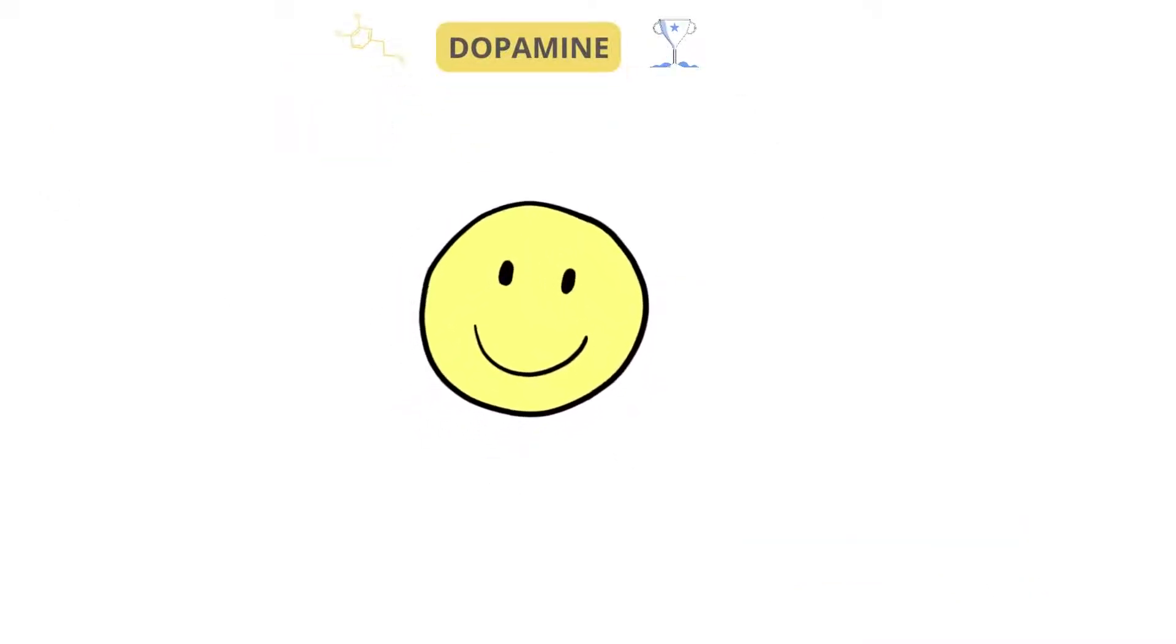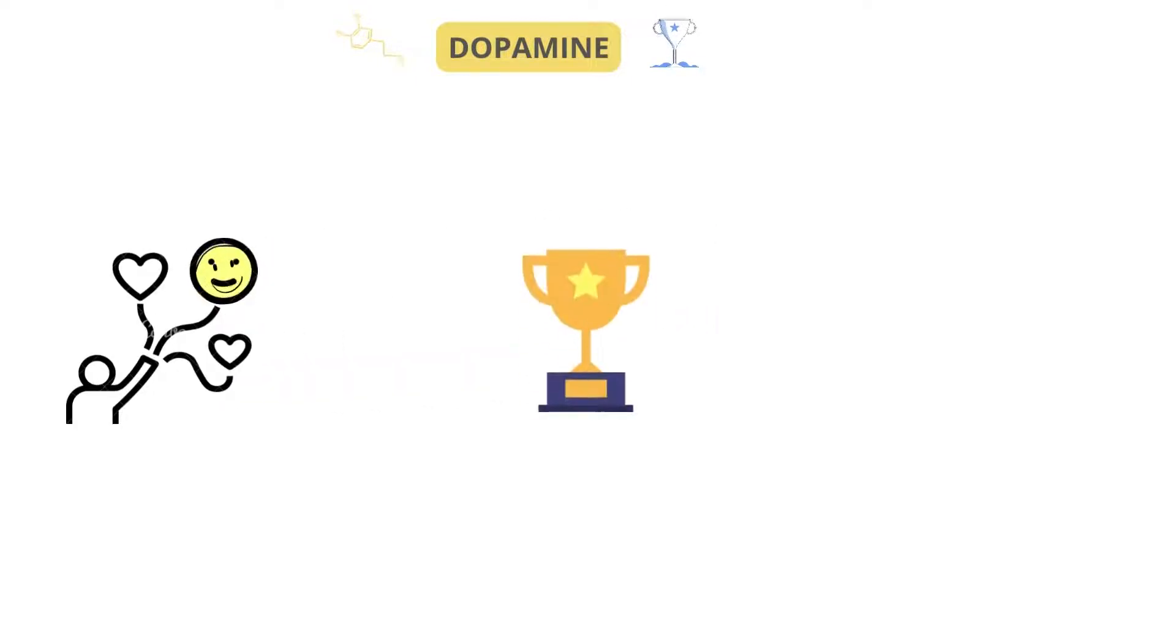Dopamine is known as the feel-good hormone. It gives you a sense of pleasure and also gives you the motivation to do something when you're feeling pleasure. Dopamine is part of your reward system.